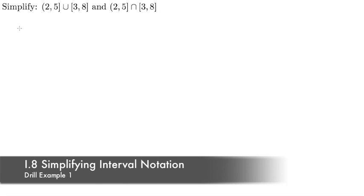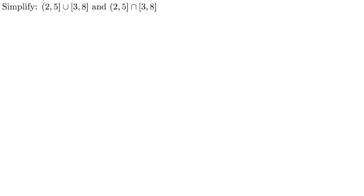Let's consider this example of simplifying two intervals. We have two different operations: we want to take both the union and the intersection of these two intervals. Generally our questions will ask us to do one or the other, but here we'll look at both simultaneously. The intervals are (2, 5] and [3, 8]. The closed brackets indicate we include those values — so we include 5 in the first, and 3 and 8 in the second. The open bracket at 2 means we take values like 2.1, 2.01, 2.00001 — everything right up to 2, but not 2 itself.